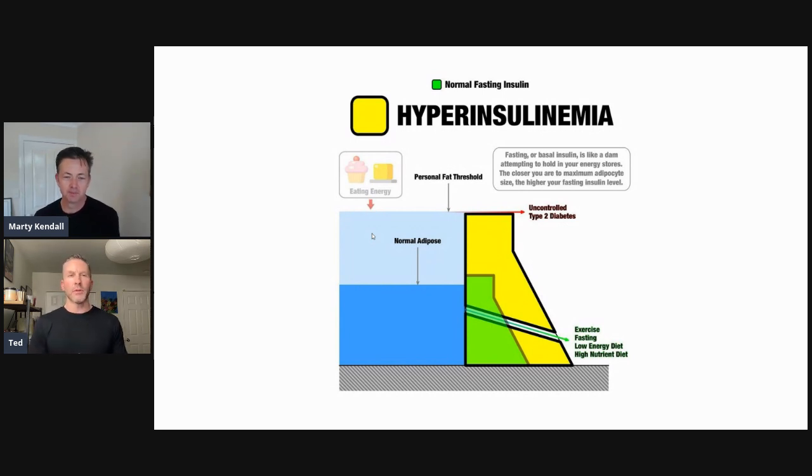So do you want to unpack the personal fat threshold and what this little chart means? Absolutely. Every bit of fat that you eat has to be stored somewhere mechanically, like the actual carbons in the fat have to go somewhere, and you store fat in your fat cells. So you have a certain number of subcutaneous fat cells on your body and they all have a diameter.